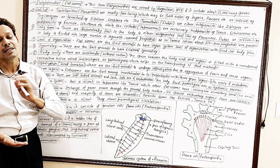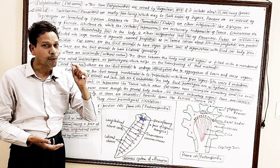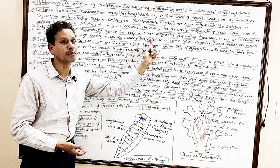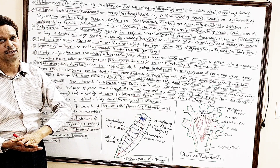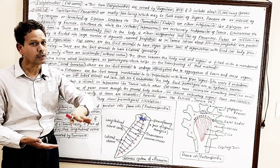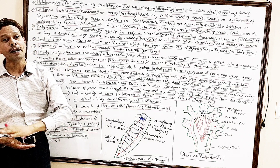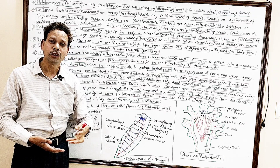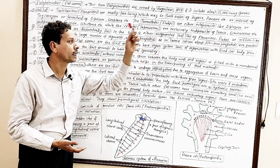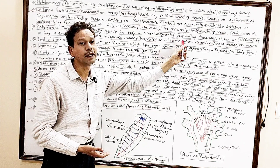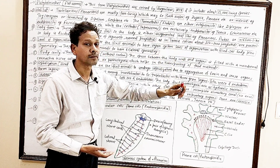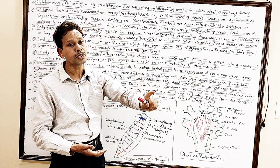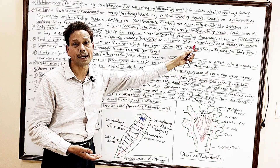The segments of the tapeworm body are named proglottids. These segments develop due to budding. For example, the tapeworm Taenia solium consists of about 850,000 proglottids.